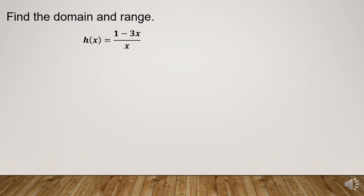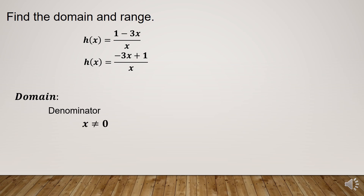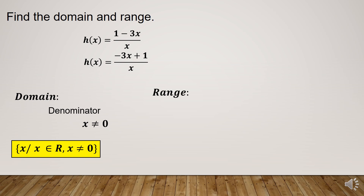Given h(x) = (1 - 3x) / x, the numerator is 1 - 3x. We need to arrange it from the highest exponent to the lowest, so h(x) = (-3x + 1) / x. To find the domain, the denominator must not be equal to 0, therefore x is not equal to 0. The domain is the set of x such that x is an element of the real numbers, but x must not be equal to 0. For the range, the leading coefficient of x in the numerator is negative 3, while the coefficient of x in the denominator is positive 1.